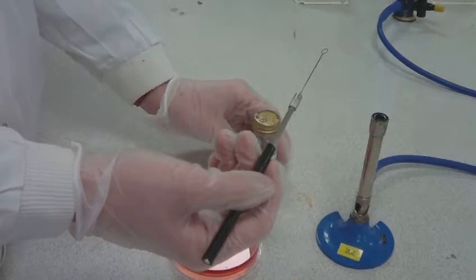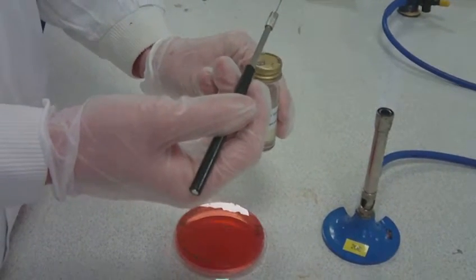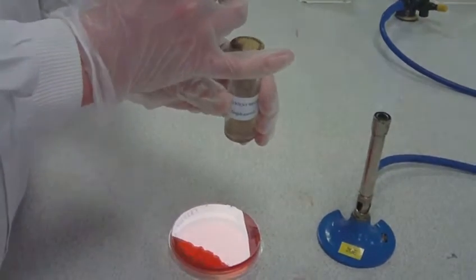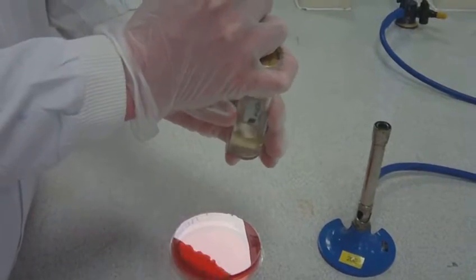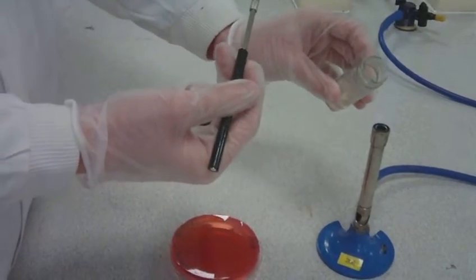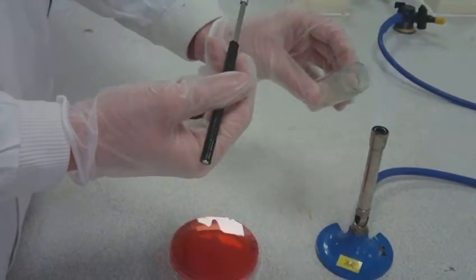Without putting the loop down, lift the test tube containing the inoculum with your left hand. Remove the cap of the bottle with the little finger on your right hand. Pass the neck of the bottle through the flame 2-3 times so it becomes sterile.